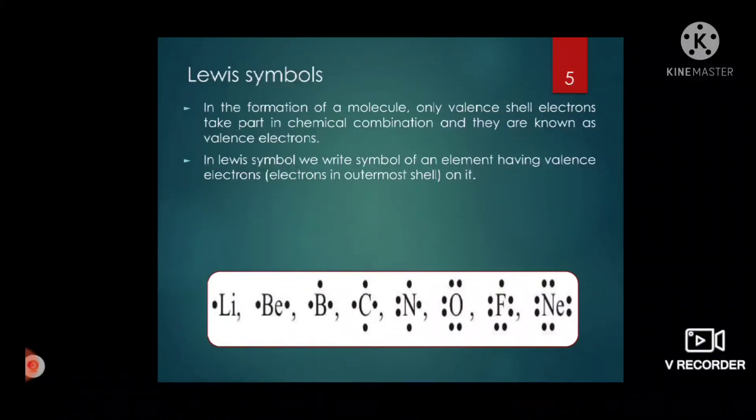Further examples of Lewis dot structures are given for lithium, beryllium, boron, carbon, nitrogen, oxygen, fluorine, and neon. In today's class, we discussed the octet rule and Lewis structures. Hope all of you understood what we learned today.